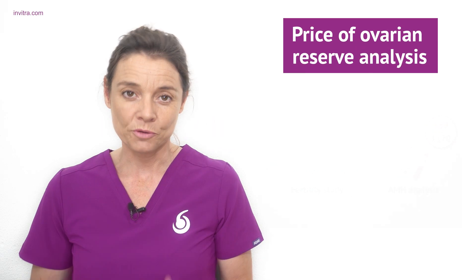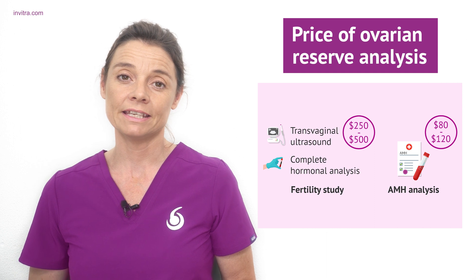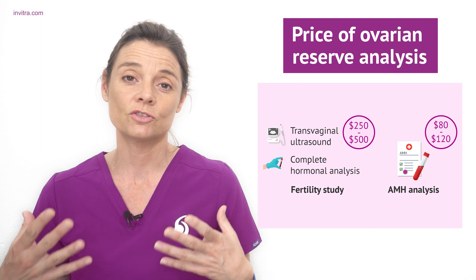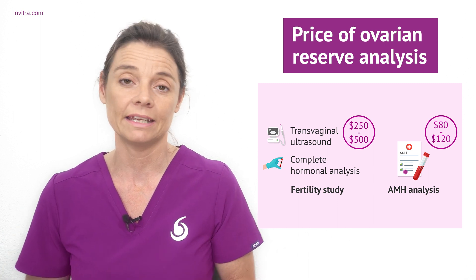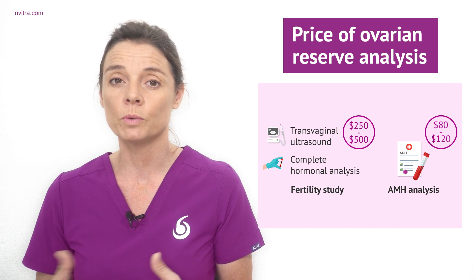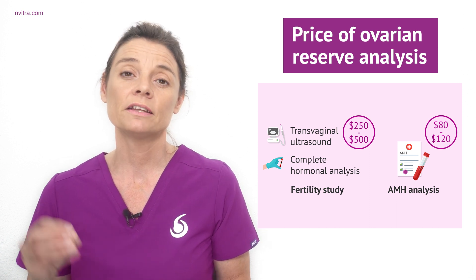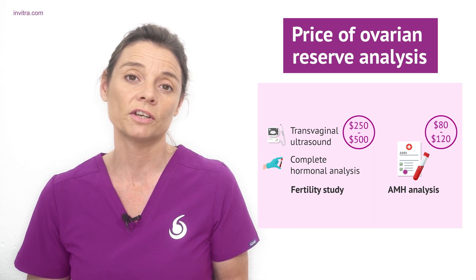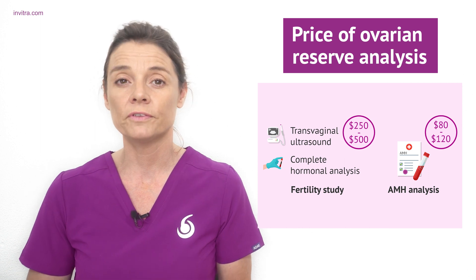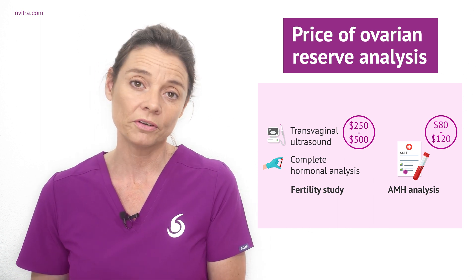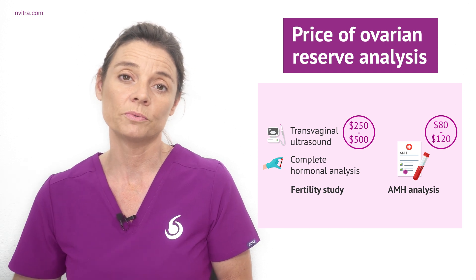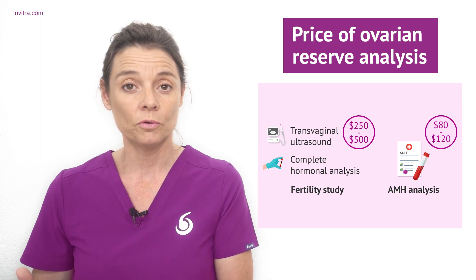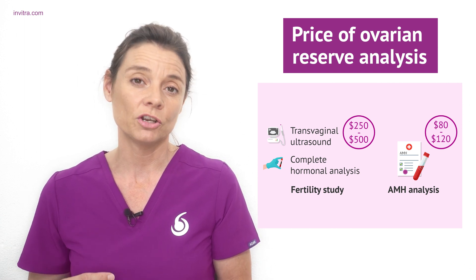As always, prices will vary depending on where you are in the world. For example in the United States treatment will depend on what state you're in and also from clinic to clinic, but you can expect to pay between about $250 to $500. The most simple test is the antral follicle count using a transvaginal ultrasound, and this will often be carried out in conjunction with the hormonal analysis to measure different levels of hormones within your blood. A simple AMH test will probably cost between $80 and $120.